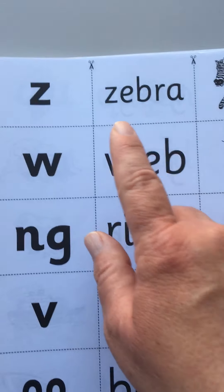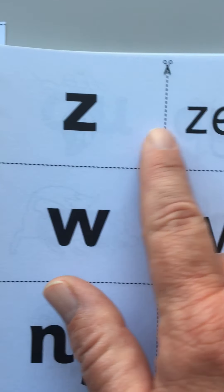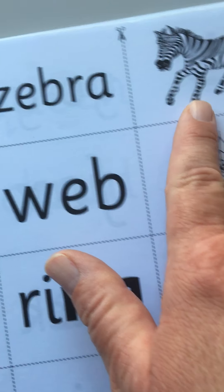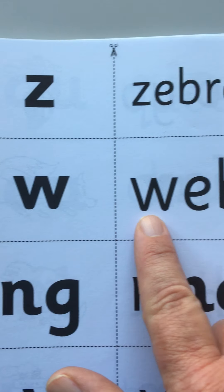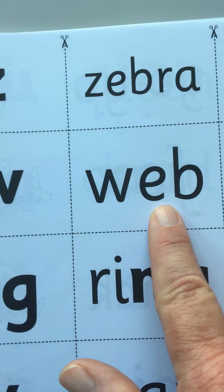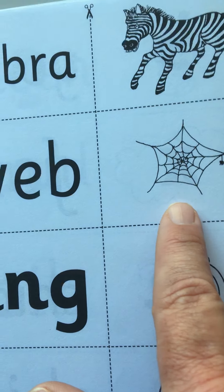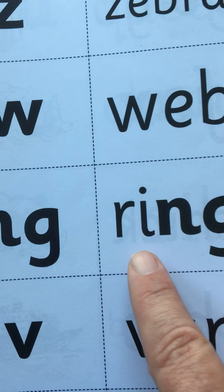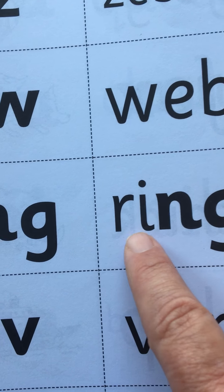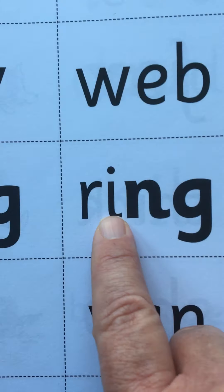Hi pandas, let's review our sounds on these letters. Okay, let's read across. Zebra, zebra, web, web, ring. Remember boys and girls, I do the whole sound with this letter too.